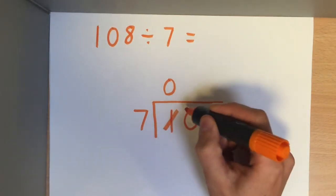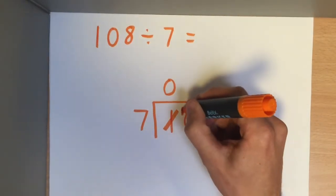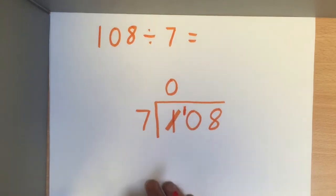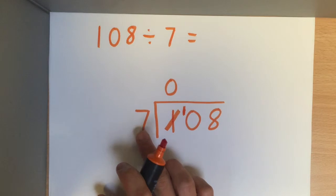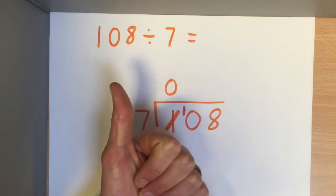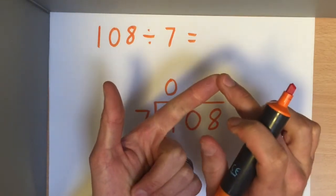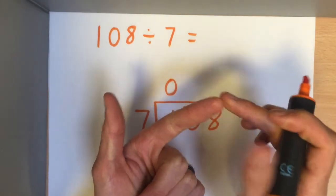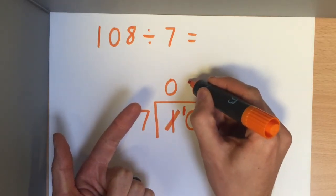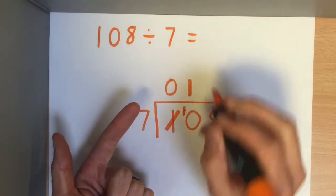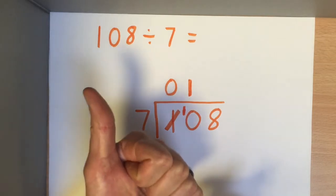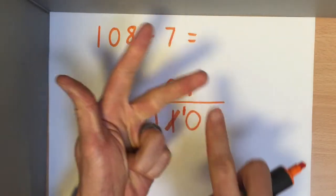We cross it out and carry it over, so now we read this number as 10. How many times does 7 go into 10? Counting up: 1×7=7, 2×7=14 — two sevens give 14, but I've only got 10. So 7 only goes into 10 once, because 7×1=7, and I've got three left over — 8, 9, 10 — that's 3 remaining. That 3 gets carried over.